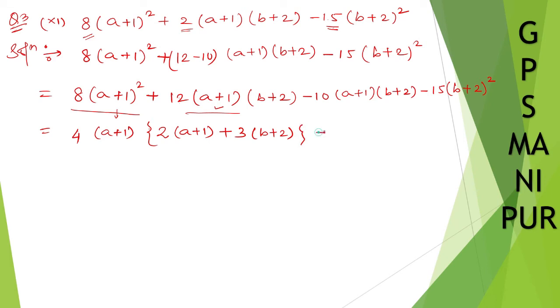Now, minus 10. From minus 10, you can take 5 common. Now, (a+1), (b+2), we can take common from both. So write on (b+2). From here, what's left out is: minus taken out, if (b+2) taken out, so 5×2 is 10, (a+1). Minus taken out, so 5×3 is 15. I hope it is clear to you.